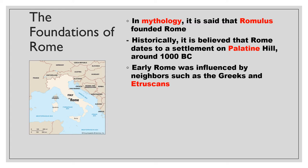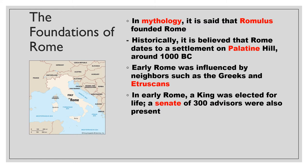Early on in Rome, there was a king of Rome who was elected for life. He also had the Senate, but they were primarily advisors — 300 advisors. They didn't really control anything. It's kind of like the cabinet today advises the president, where the president makes all the executive decisions. It was comparable to that in early Rome.